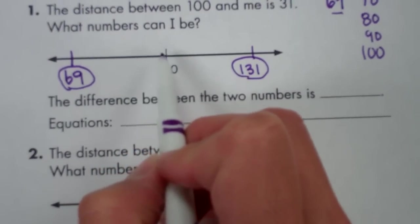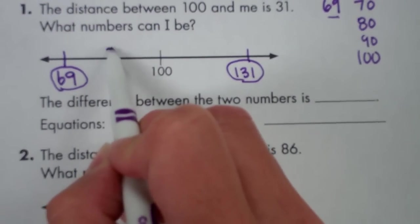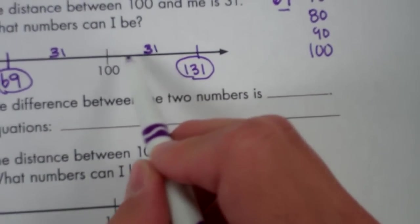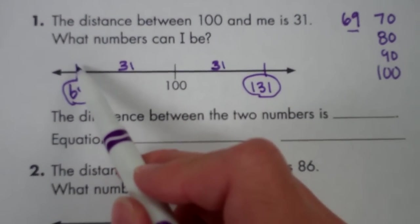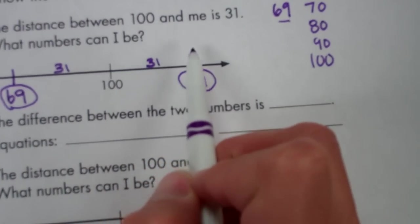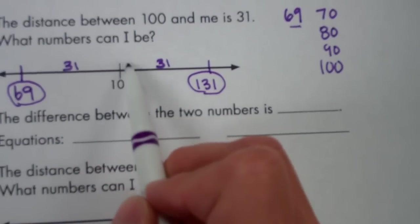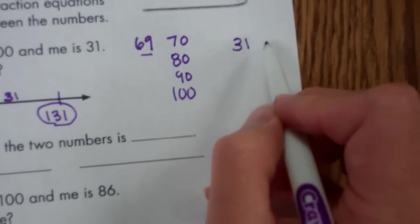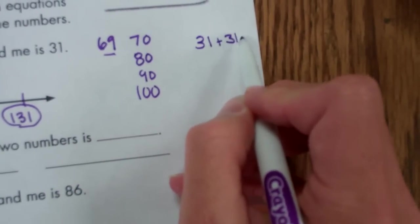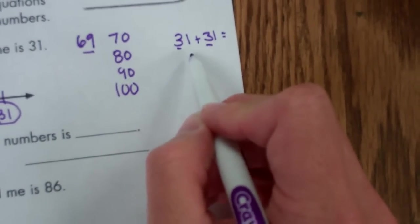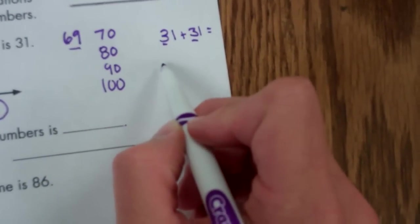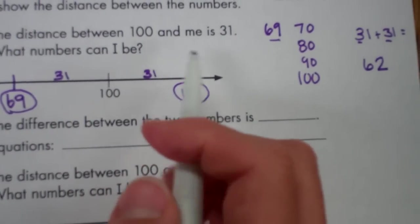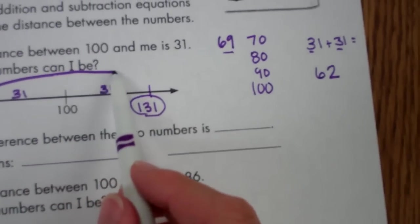Well, we know that 69 is 31 away from 100, because that's the problem that we just did. And we know that 131 is 31 away from 100 as well. So in order to go from 69 all the way to 131, we have to add 31 plus 31. Well, three tens and one one plus three tens and one one gives us six tens and two ones or 62. So the total difference between 69 and 131 would be 62.